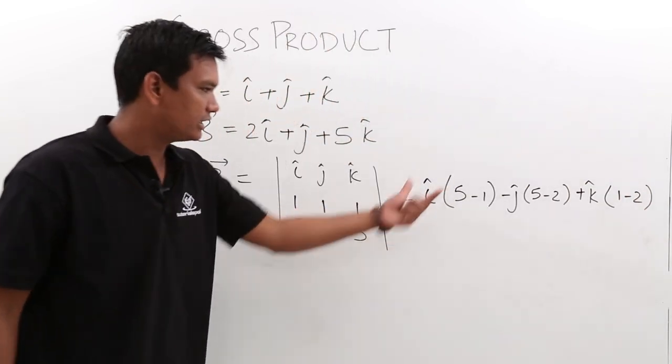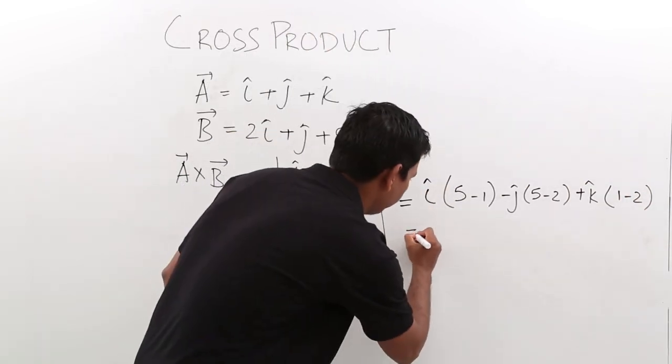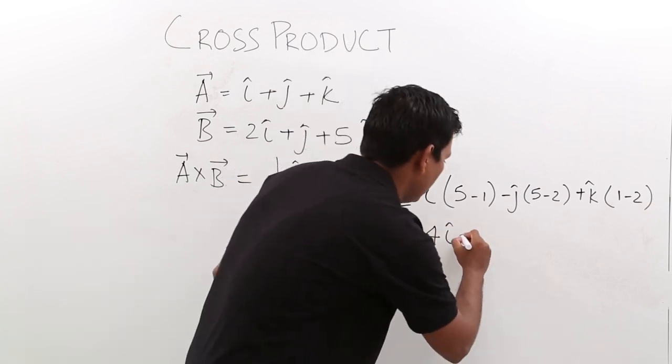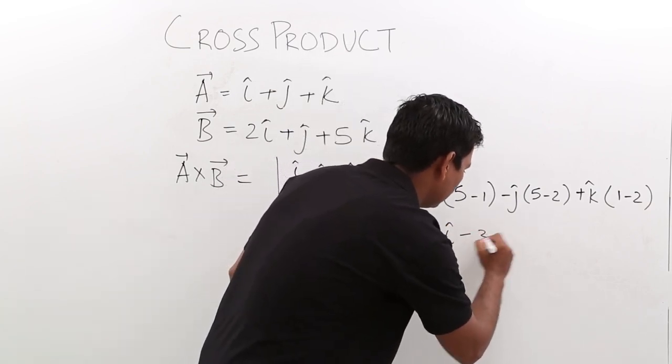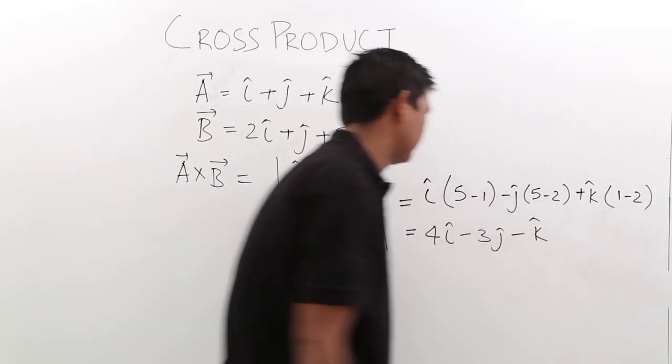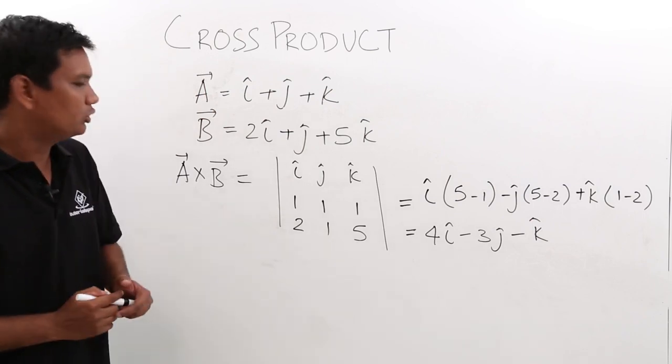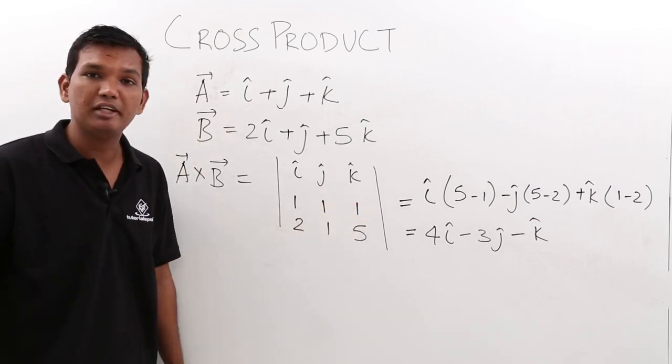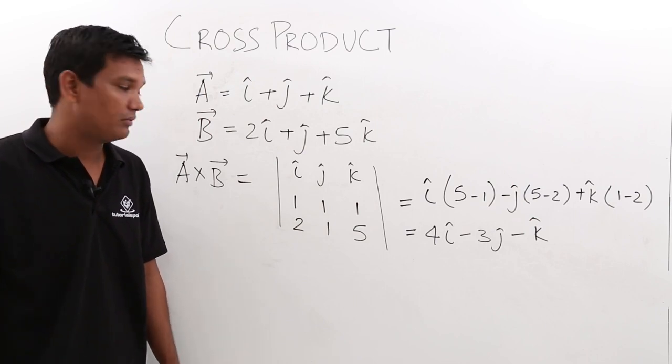Let us calculate the resultant, which comes out to be 4 i minus 3 j minus k cap. The resultant of a cross b is 4 i minus 3 j minus k cap.